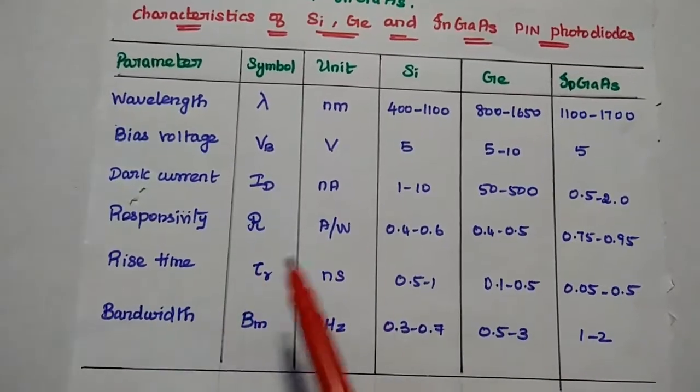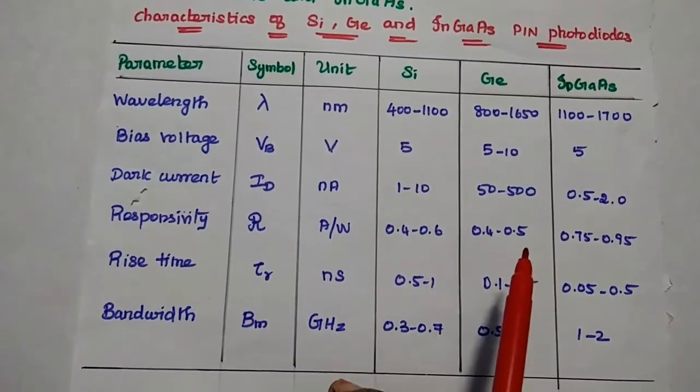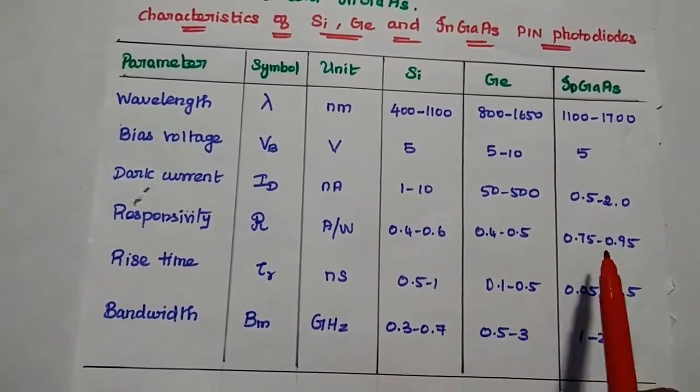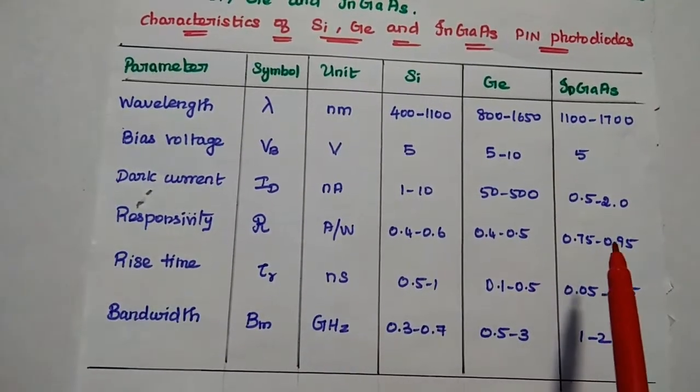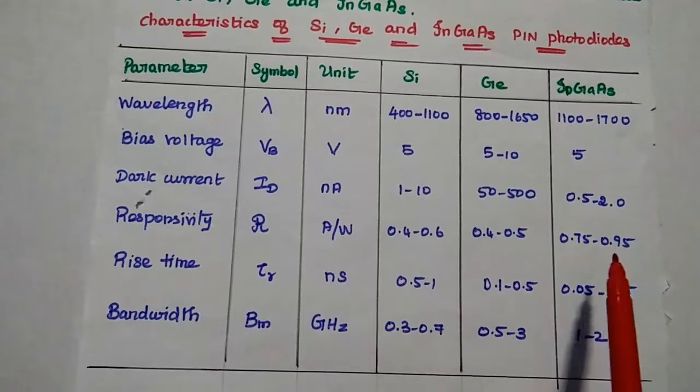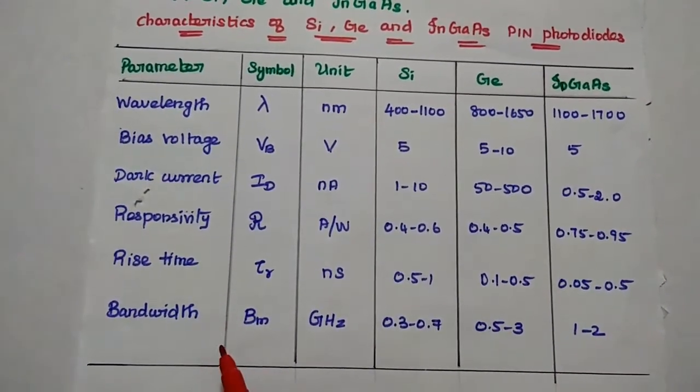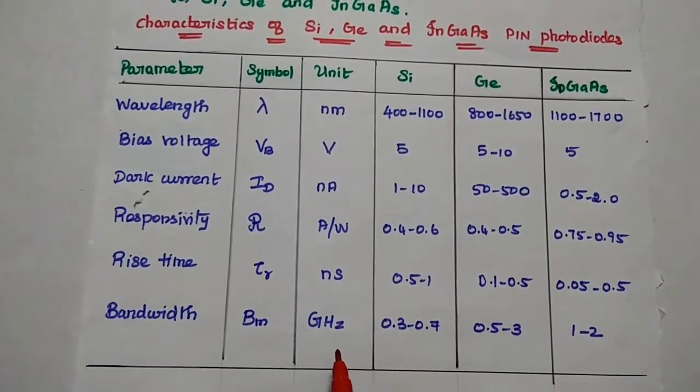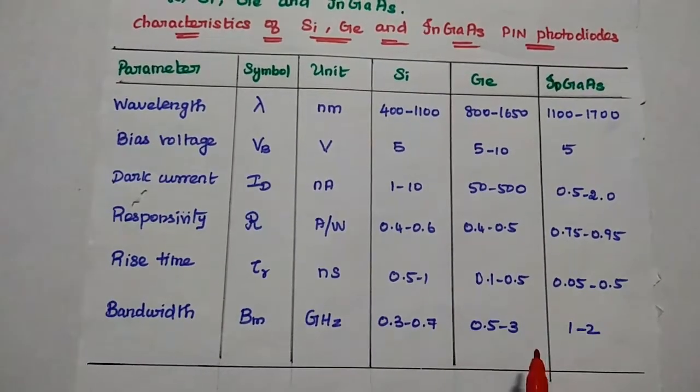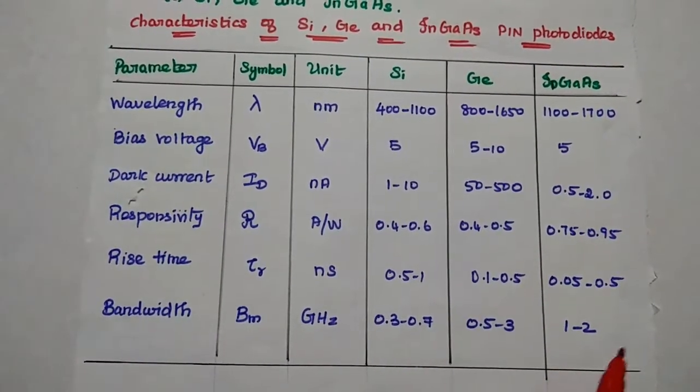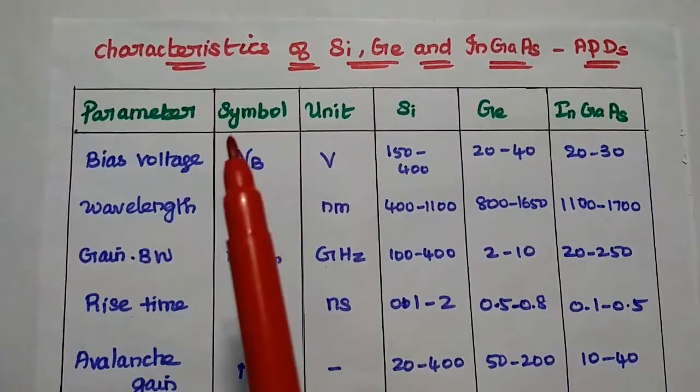Then the responsivity is given as 0.4 to 0.6 for silicon, 0.4 to 0.5. Here, its value is 0.75 to 0.95, which provides high responsivity, that is indium gallium arsenide PIN photodiodes. Similarly, we are having rise time and bandwidth. Here the bandwidth in gigahertz, its value is 0.3 to 0.7 for silicon, 0.5 to 3 gigahertz for germanium, but for indium gallium arsenide, its value is 1 to 2 gigahertz.